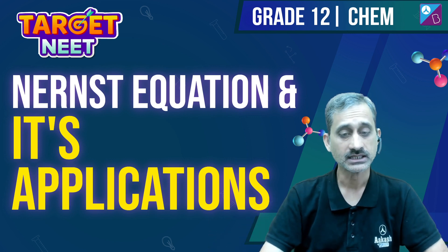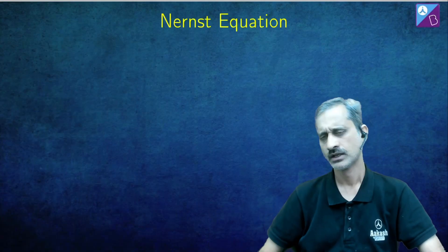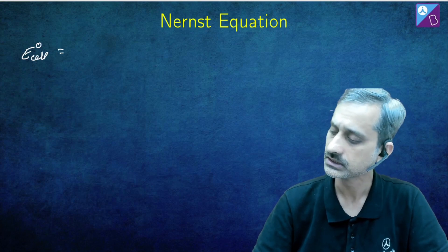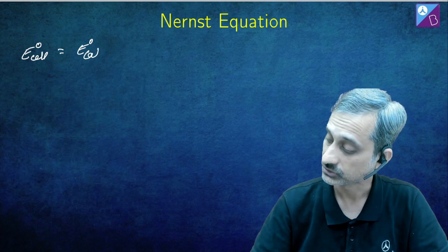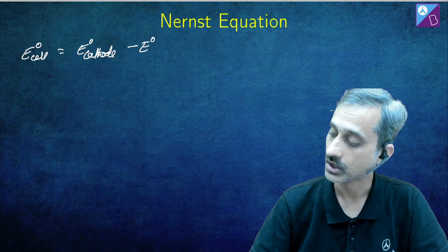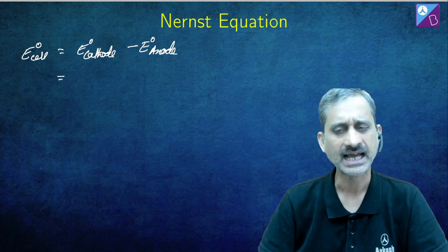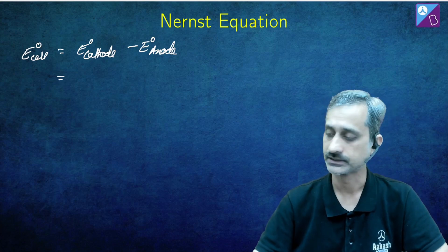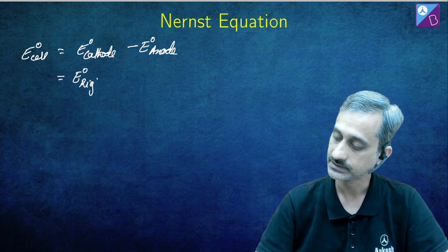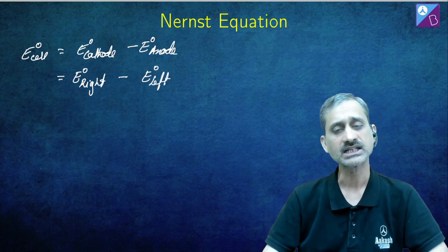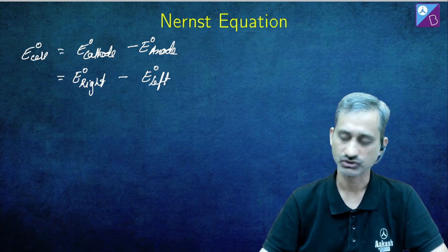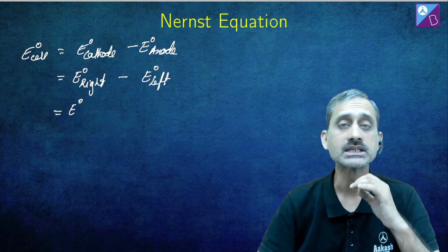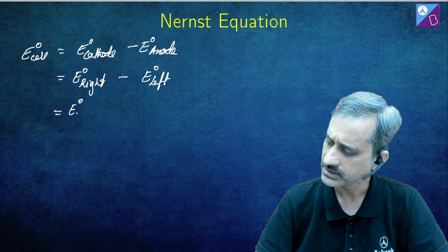To talk about the Nernst equation, let us first understand how we find the potential of a cell. When we talk about the potential of a cell, we have E_cell and E°_cell. E°_cell is equal to E° of the cathode minus E° of the anode. The cathode is the right terminal — the right electrode — and this is a strict convention which is never violated. So we can always write it as E°_right minus E°_left, and that is how we find the standard cell potential.